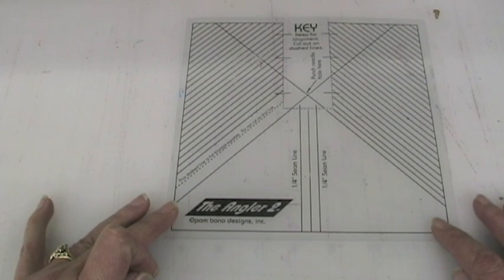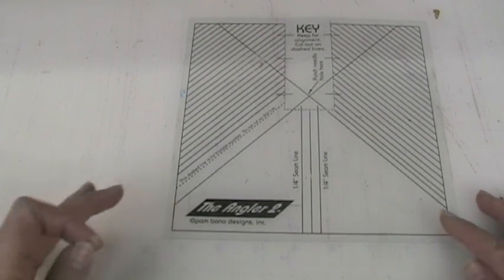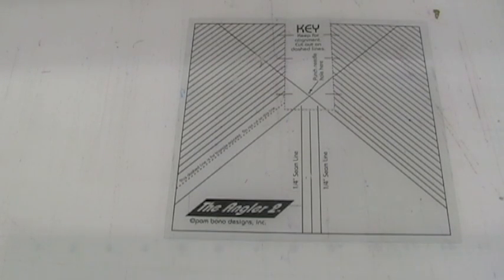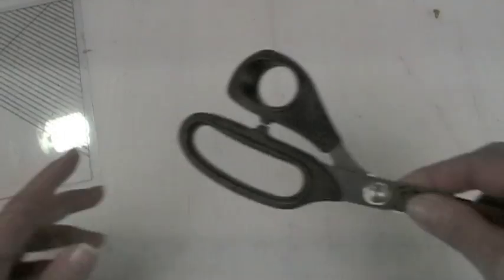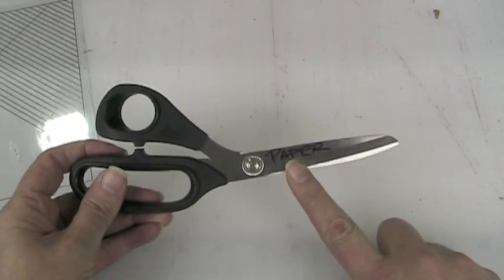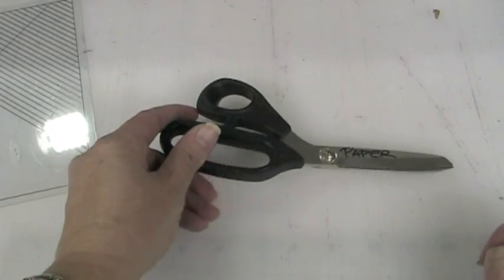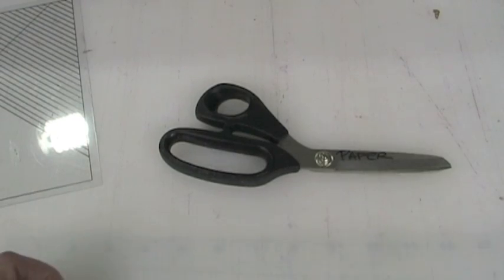Hi Gail. I'm going to show you how to put the Angler 2 in. You're going to need a couple of things. You're going to need scissors. Make sure you have paper or craft scissors. Do not use your good scissors.